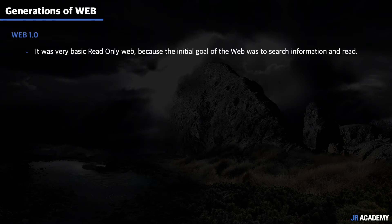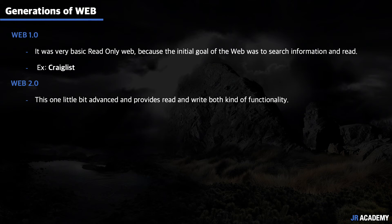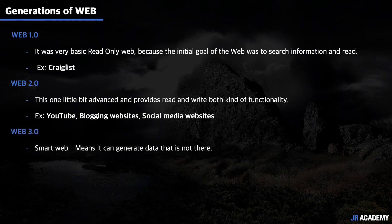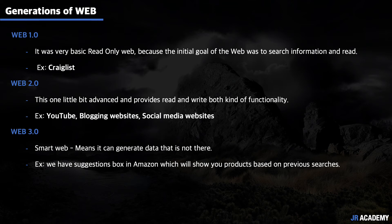In 1991 the browser came out and the browser wars began, with different kinds of applications starting to emerge. This was the first generation of web — Web 1.0 — a very basic, read-only web since the initial goal was to search and read information, with very limited functionality. Web 2.0 is more advanced, providing both read and write functionality — YouTube, blogging websites, and social media are Web 2.0. Web 3.0 is the smart web; it can generate data that wasn't previously there, such as Amazon product suggestions based on browsing history, plus AI and the Internet of Things.